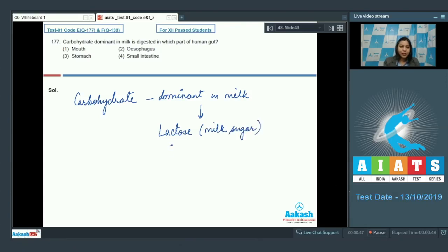Lactose is digested by an enzyme called lactase into the components of lactose that is glucose plus galactose. Now, this enzyme lactase is present in the intestinal juice. So carbohydrate dominant in milk is digested in the small intestine.